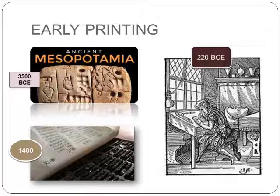They began to print books like this, called block books. This was much quicker than copying books by hand, but the printer had to make a block for each page.